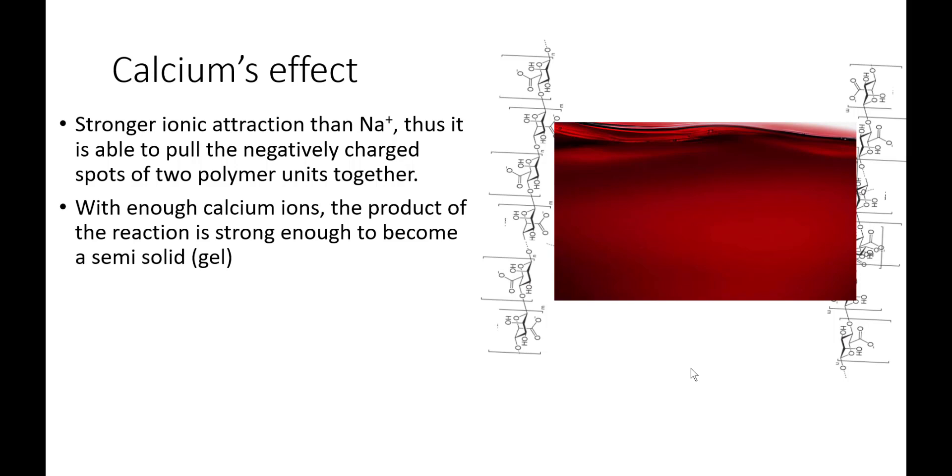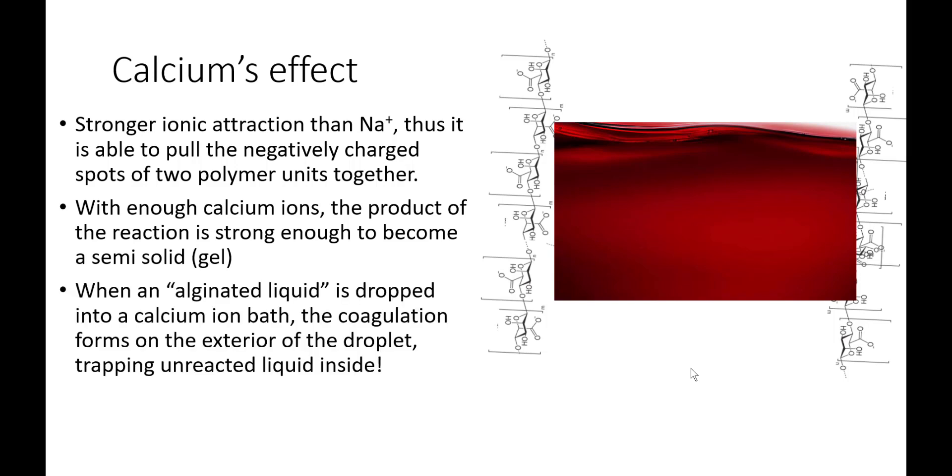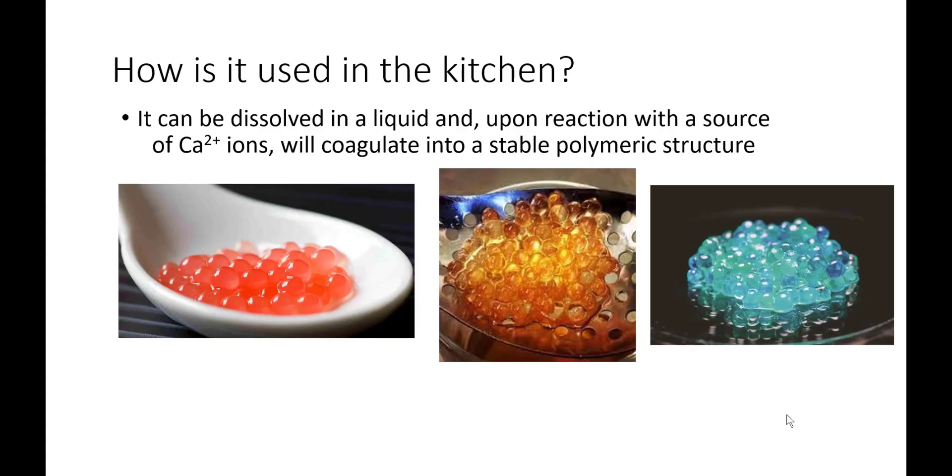But what if we reverse this? What if instead of adding calcium to our alginated solution, we added our alginated solution to a calcium bath, drop by drop? Whenever this happens, the coagulation reaction of all our polymer chains coming together will actually occur on the exterior of each droplet, trapping any unreacted liquids inside eventually, because that liquid can no longer penetrate the semi-solid gel.